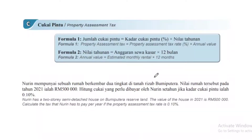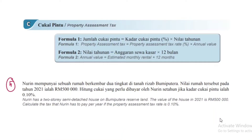Cukai pintu ni senang — kita rujuk terus pada persen dia. Formula: Cukai pintu = Kadar cukai pintu (peratus) darab dengan Nilai Tahunan. Formula kedua: Nilai Tahunan = Anggaran sewa kasar darab dengan 12. Soalan kelima: Nurin mempunyai sebuah rumah berkembar dua tingkat. Nilai rumah tersebut pada 2021 ialah RM500,000. Hitung cukai yang perlu dibayar oleh Nurin setahun jika kadar cukai pintu ialah 0.10%.